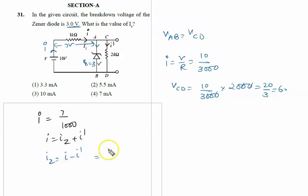What is the value of I? That is 7 by 1000. What is the value of I dash? I dash is the current through the 2k ohm. So voltage across the 2k ohm is given to you, that is 3V because Zener is working, upon 2000. So we can say 3 upon 2000, so minus 3 upon 2000.